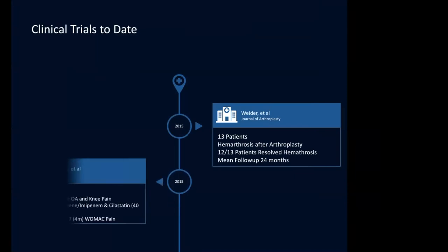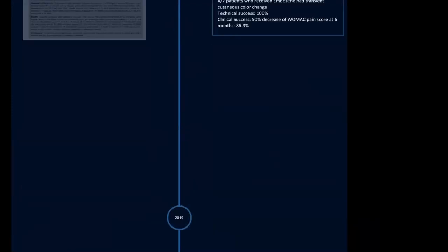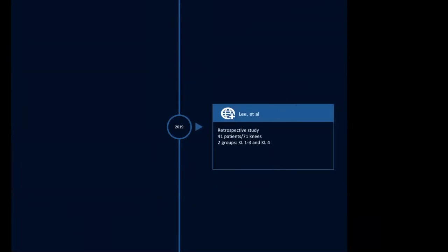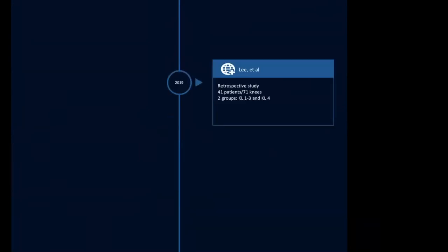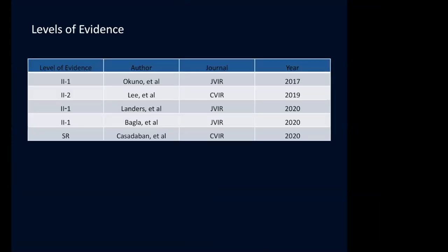This synovitis-angiogenesis connection in OA has been well-established—described 15 years ago in the Journal of Rheumatology. Traditionally radiology education describes OA as primarily degenerative, but the first two stages are primarily inflammatory. There have been multiple clinical trials to date. In 2015 we described a series of 13 patients with hemarthrosis after knee arthroplasty in the Journal of Arthroplasty, but it wasn't until later that year that Dr. Yuji Okono described his first 14 patients in the setting of arthritis—not hemarthrosis.